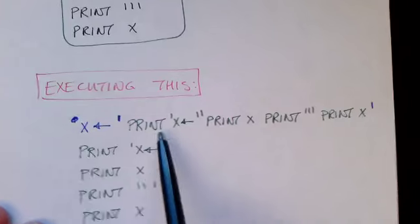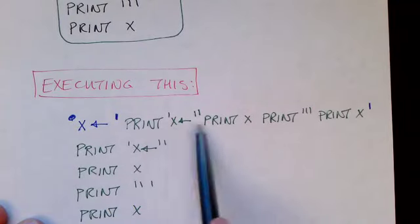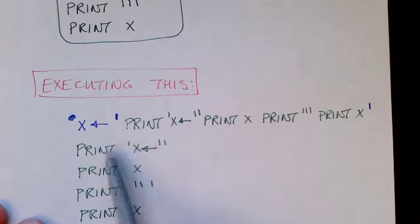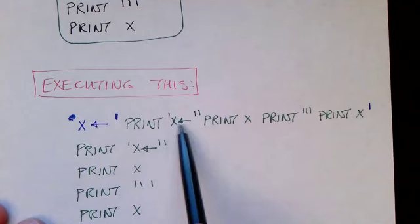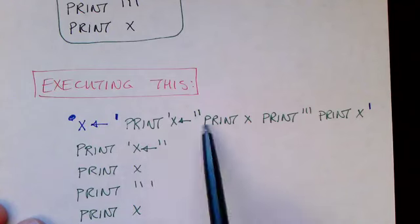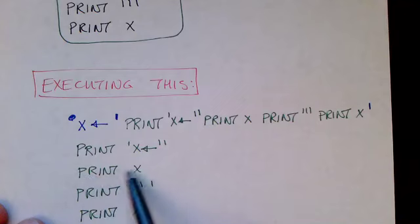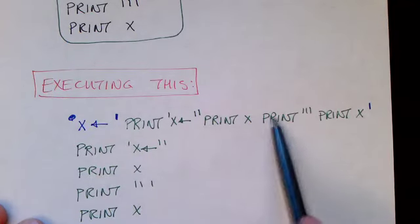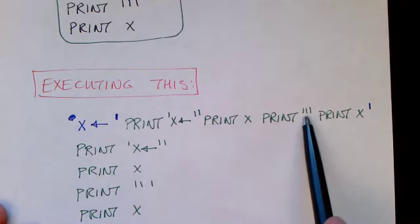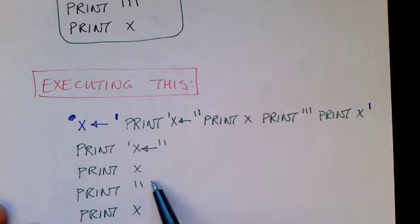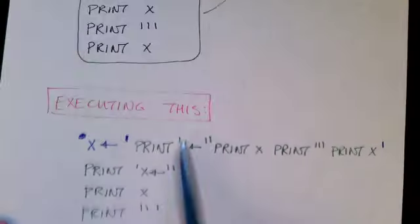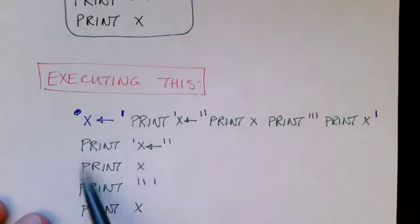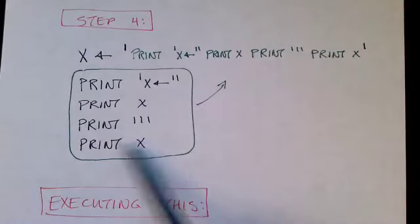So, x is print x gets. So, we print, quote, x gets, quote, quote. Then we print print x. And then we have print, quote, quote, quote, which we print here. And then finally, print x. So, this shows the output of our program. And this is the program itself. And you can see that they are identical.